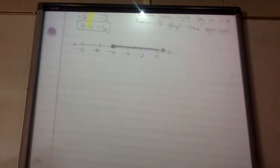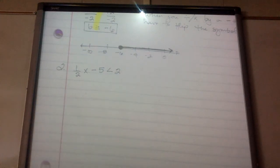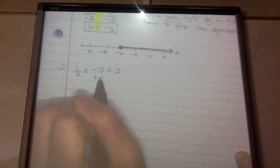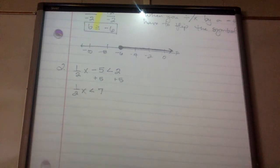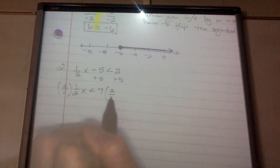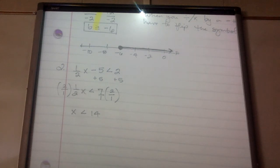Next one: ½x minus 5 is less than 2. You can pause it, solve it, graph it, and then push play and check my work. The first thing I'm going to do is add 5. So ½x is less than 7. To get rid of ½, I'm going to multiply both sides by the reciprocal. So I get x is less than 14 — 7 times 2 is 14.